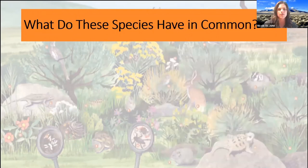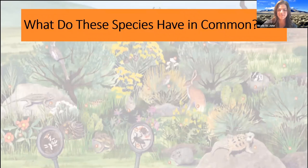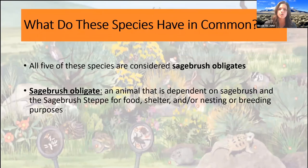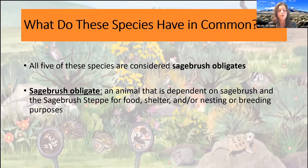I have one more chat question for you guys: what do these five wildlife species we just covered all have in common? There's one commonality between them. Good — sagebrush. They all share the steppe and they eat sagebrush — sagebrush is an important factor. All of these species are what we consider sagebrush obligates. By definition, a sagebrush obligate is dependent on the sagebrush and the sagebrush steppe for one aspect of their lives, whether it be food, shelter, or nesting or breeding purposes. All five of those species in some way rely heavily on sagebrush to make their lives work.